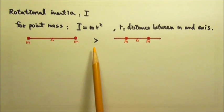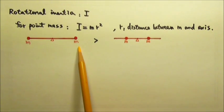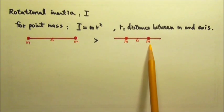This combination, because the two mass m's are farther away from the axis than those ones.